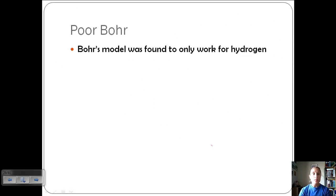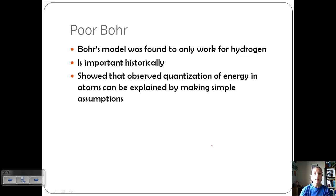The only problem with Bohr's model was that it was found that it only worked for hydrogen. When we tried to apply it to other elements, it didn't predict correct results. It is important historically because it did help us with this quantized energy level and finding the amount of energy to jump orbitals and things like that. And it also showed that observed quantization of energy in atoms can be explained by making these simple assumptions that it jumps these energy levels and that they're very specific levels. The current model of the atom is not derived from Bohr's model, but it is historically important.